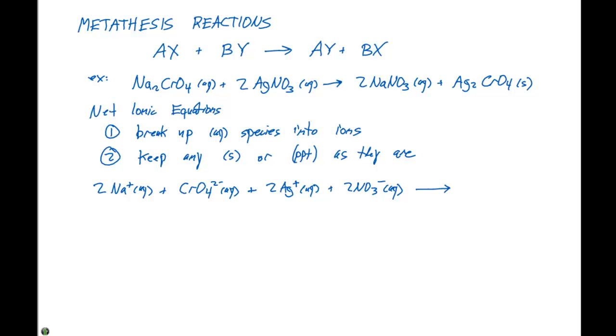When sodium and silver, two cations, they're gonna repel each other, so they're never gonna form a precipitate. But the question is, will sodium form a precipitate with nitrate? If we look at the solubility guidelines, all nitrates are soluble and a precipitate will not form. But a precipitate will form when silver plus ions come into contact with chromate two minus ions.